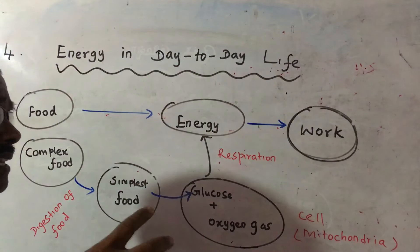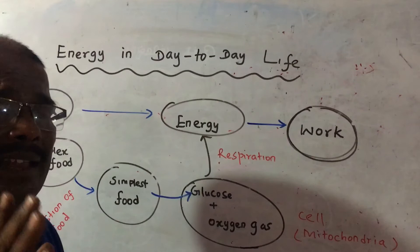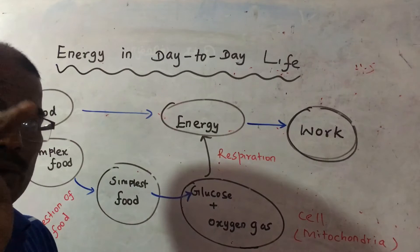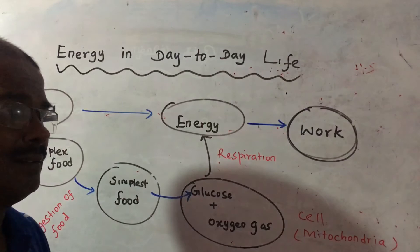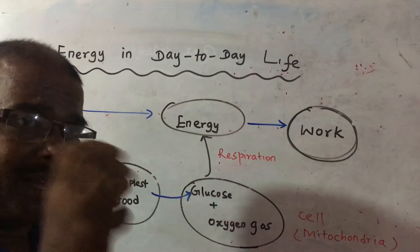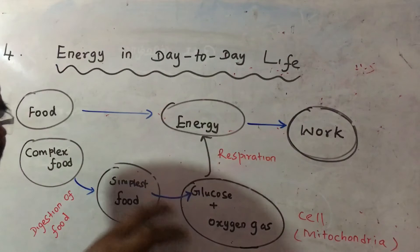Already, we studied in the first unit there are characteristics of organisms: growth, nutrition, movement, respiration, reproduction. These are some characteristics of organisms. Among these, respiration produces energy.